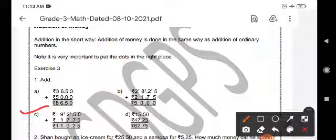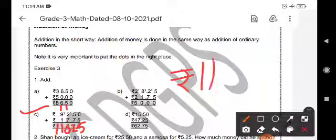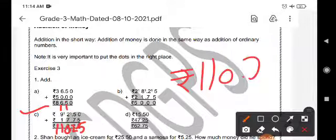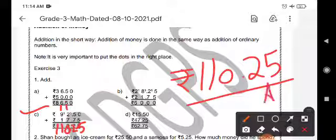Now, come to the C part. Zero plus five is five. Seven plus five is twelve. One is carried over to the next place. You will put a dot for separating the rupees and paisa. Seven plus three is ten. One will go over as carry over. Nine plus one is ten. Ten plus one is eleven. So, what you are going to get is 110. One hundred and ten rupees and twenty five paisa is your answer.